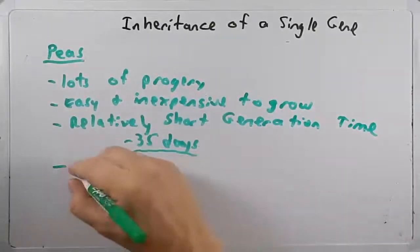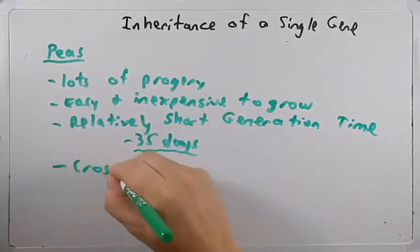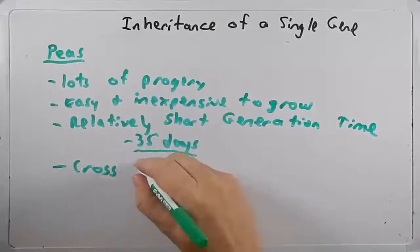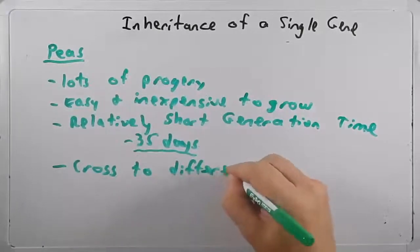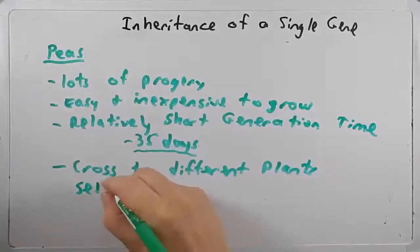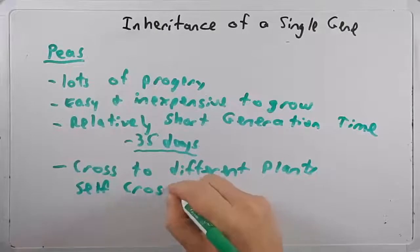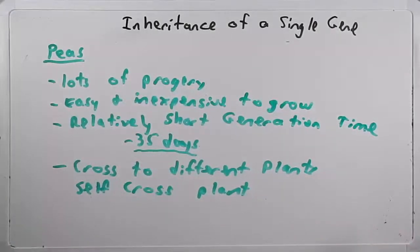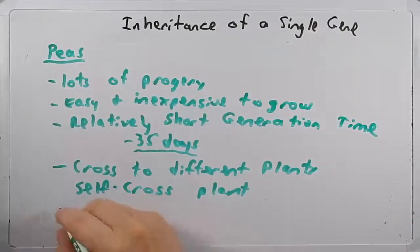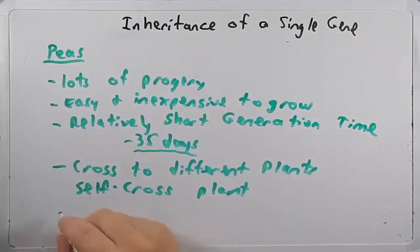Something you can do with a lot of plants, including the pea plants, is that you could cross them from one plant to the other or cross two different plants, or you could self-cross them. You could take a single plant because plants would have both male and female reproductive parts. So you could take a single plant and self-cross and that turned out to be very advantageous for Mendel.